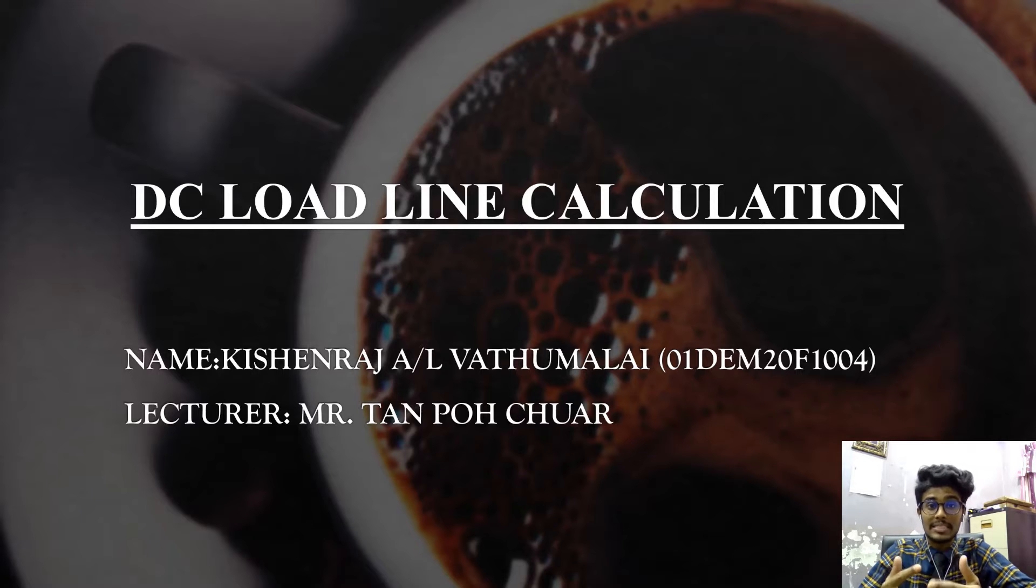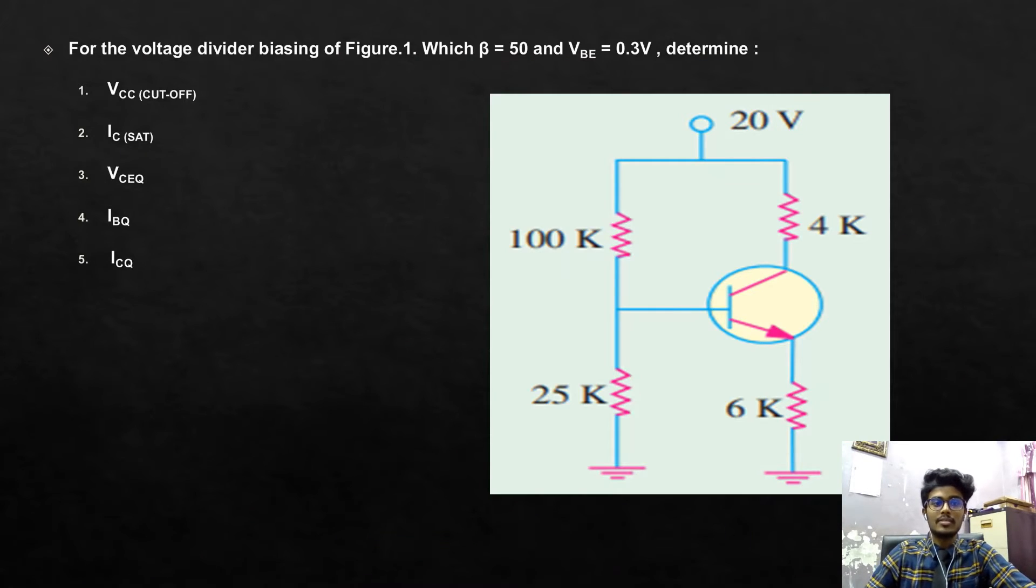Today, I would like to present about how to calculate DC load line. Let's open to the question. The question given is for the voltage divider biasing on figure 1, this is the figure 1, which beta is already given is 50 and Vbe is equals to 0.2V.